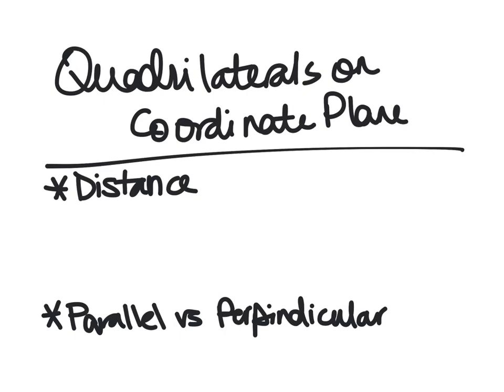All right, so today's lesson, we're going to be talking about quadrilaterals on the coordinate plane. So it's determining if we are talking about a parallelogram, a kite, a square, a rhombus, a trapezoid, but on the coordinate plane, which means we're talking about things that are going to be on a graph. Okay, so today a few things are going to be important.